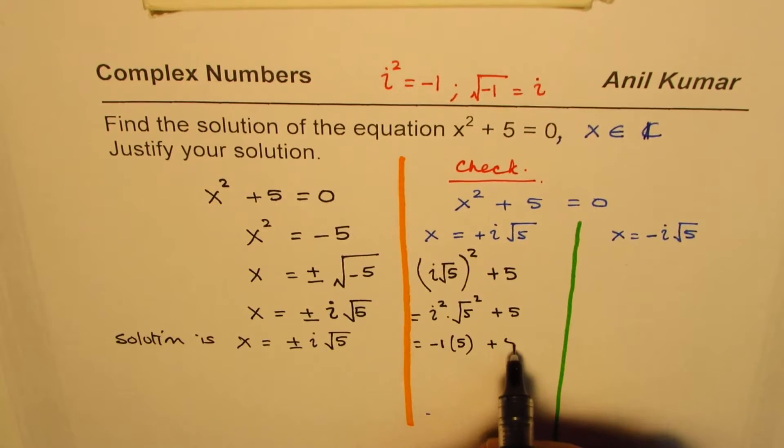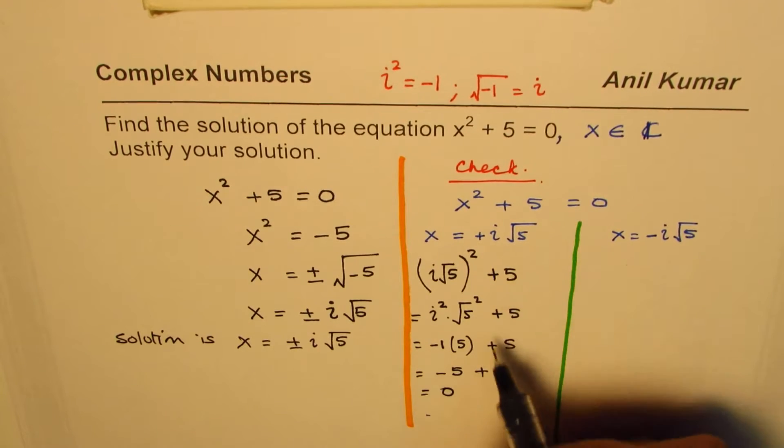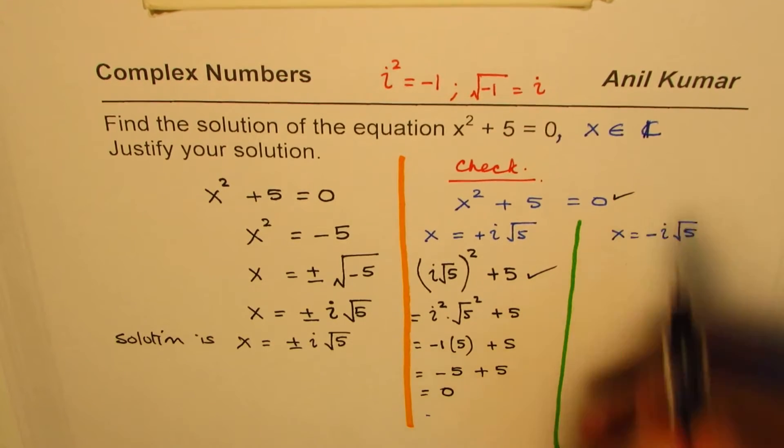So you'll get -5 + 5, which is indeed 0, and so it works. So this works, we get 0.